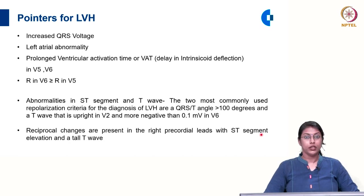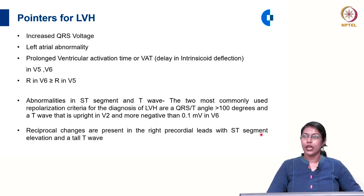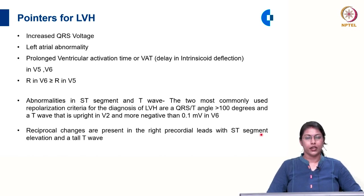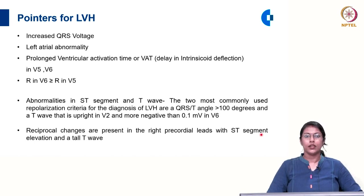There are several pointers for left ventricular hypertrophy in the ECG. First, increased QRS voltage. Second, left atrial abnormality — during diastole when the mitral valve is open, the left ventricle and left atrium behave like a common chamber, and any pressure or volume differences in the left ventricle are reflected to the left atrium. So the presence of associated left atrial abnormality is a pointer for LVH.